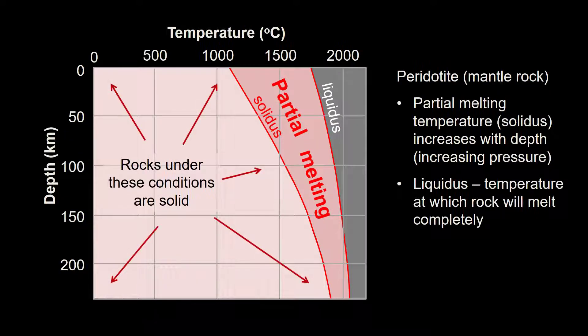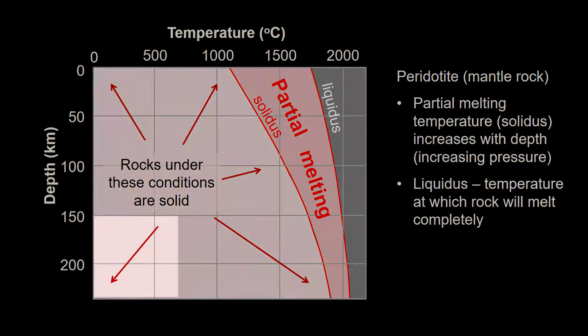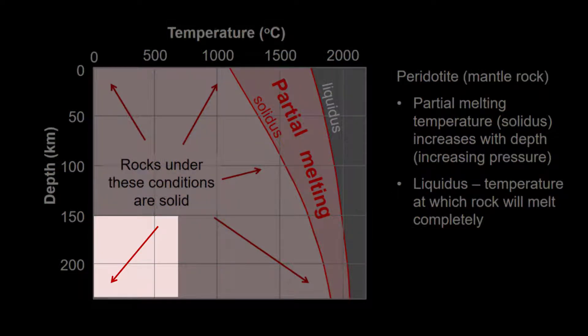Technically, any area to the left of the solidus curve represents conditions where the rocks would remain solid. However, many of these conditions are actually unrealistic. For example, we aren't going to find any deeply buried rocks at relatively low temperatures like these.